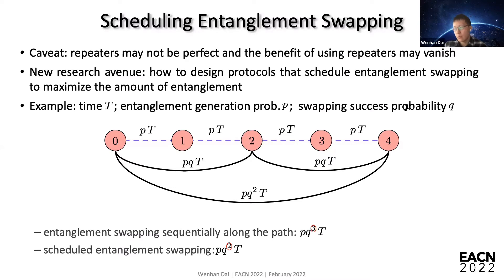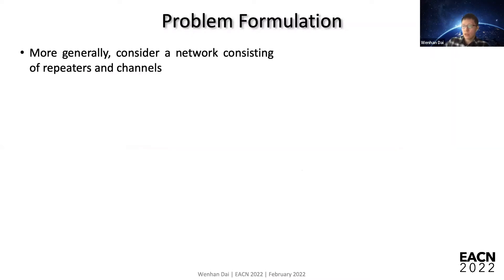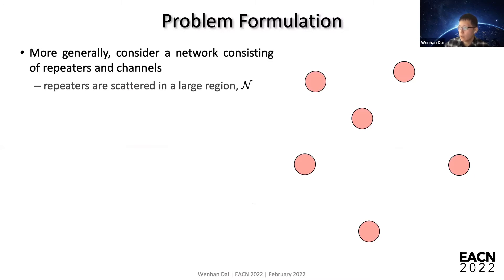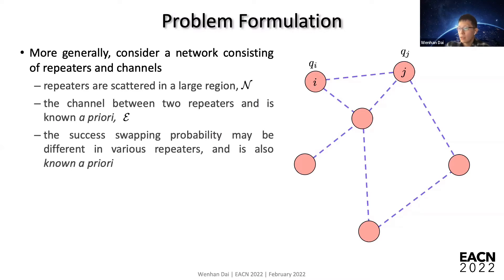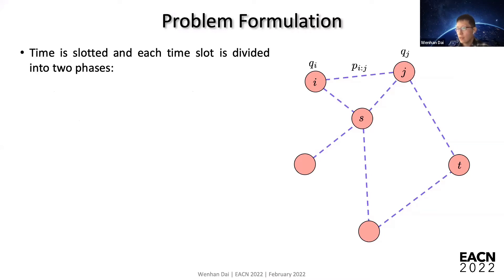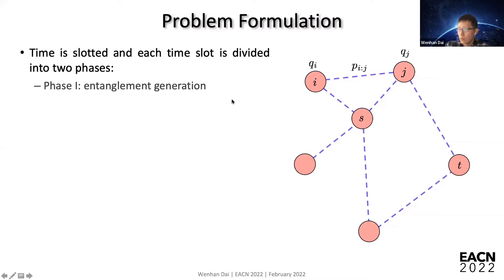This is just a toy example of a repeater chain with four channels. In the more generic case, you have a quantum network consisting of repeaters and channels. Channels have their parameters which are known, and the success swapping probability may vary depending on which repeater it is — these parameters are also known a priori. Two nodes, a source and a sink, are designated.